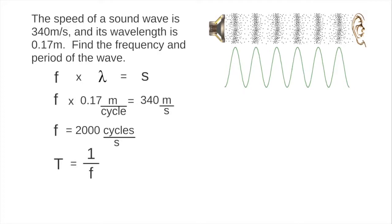Next, the period is simply the reciprocal of the frequency, so 1 over 2,000 seconds per cycle, or 0.0005 seconds. The per cycle is understood.